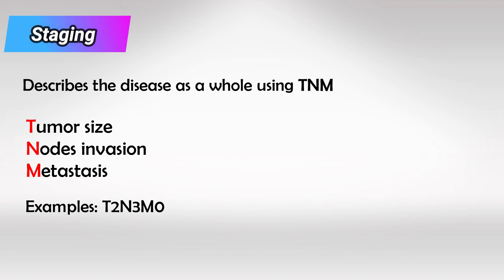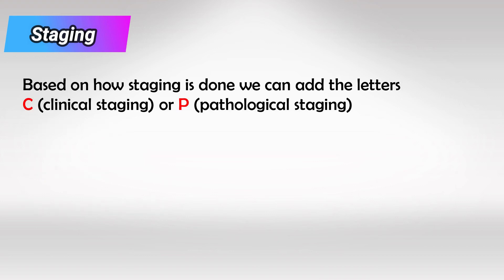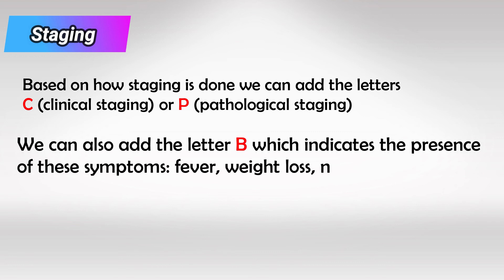M0 means that there is no metastasis, while M1 means that there is metastasis. Sometimes, after the TNM staging, we add letters like C, P, or B. Adding the letter C means that the diagnosis was made clinically. Adding the letter P means that pathological staging was made. And adding the letter B indicates tumor symptoms like fever, weight loss, and night sweating.